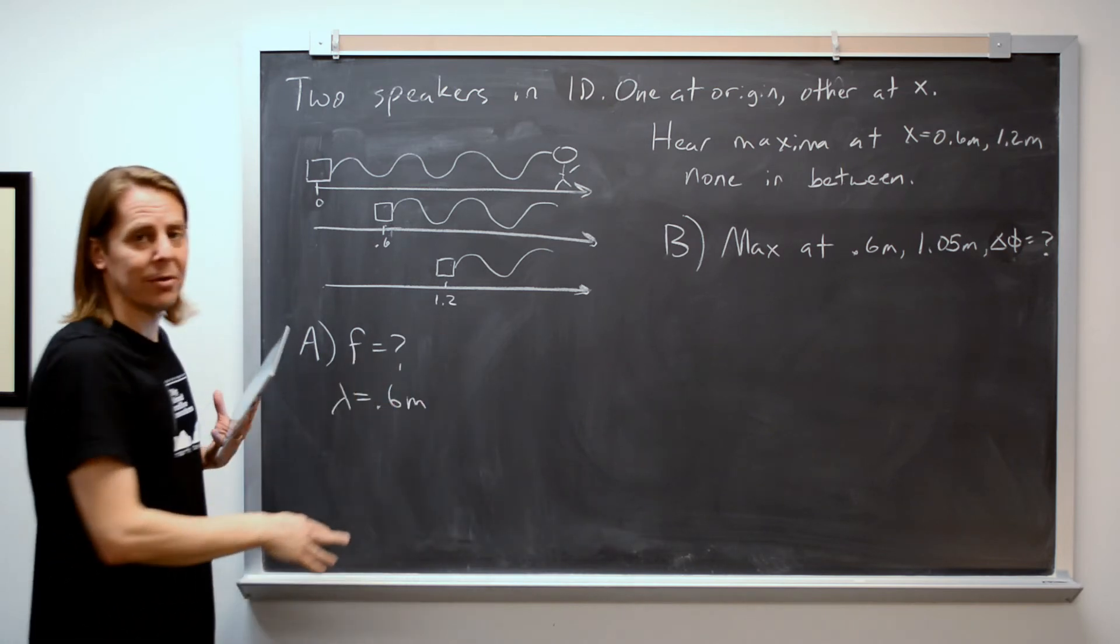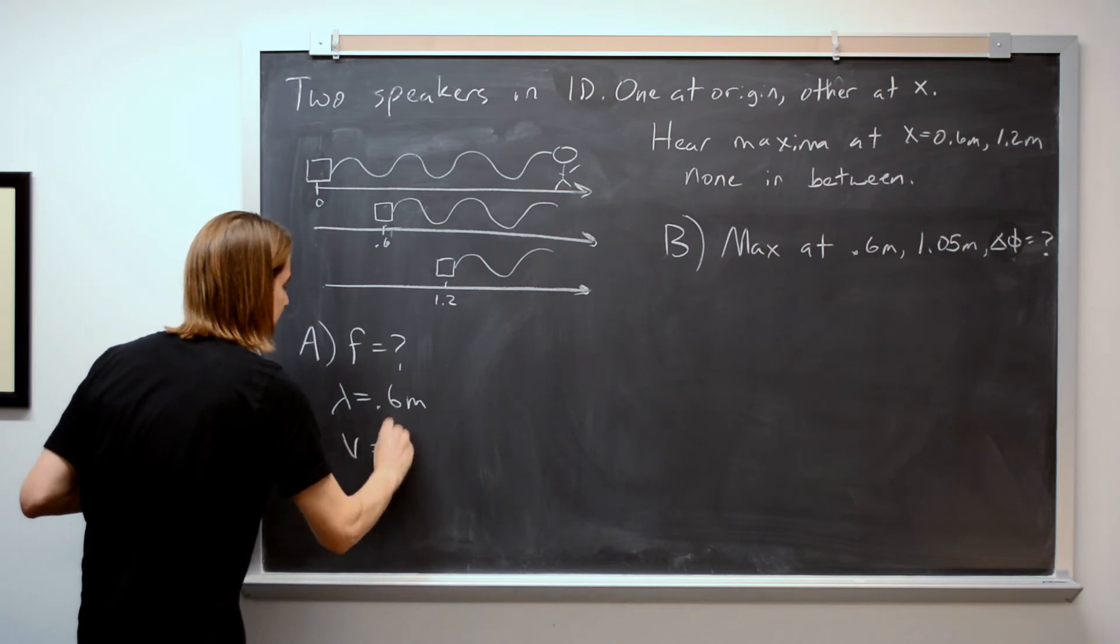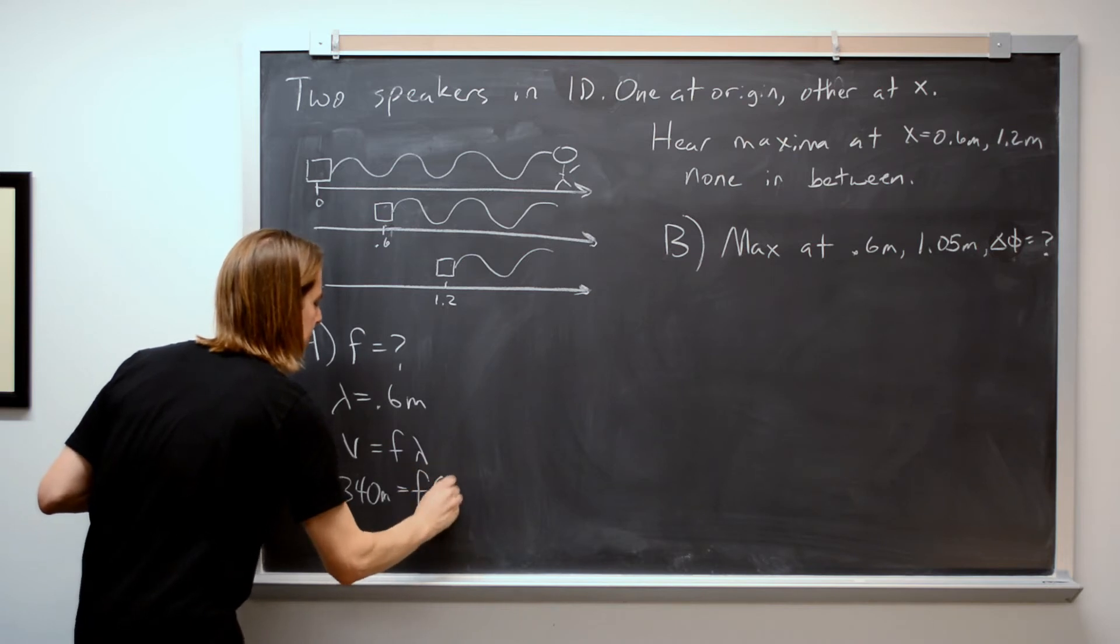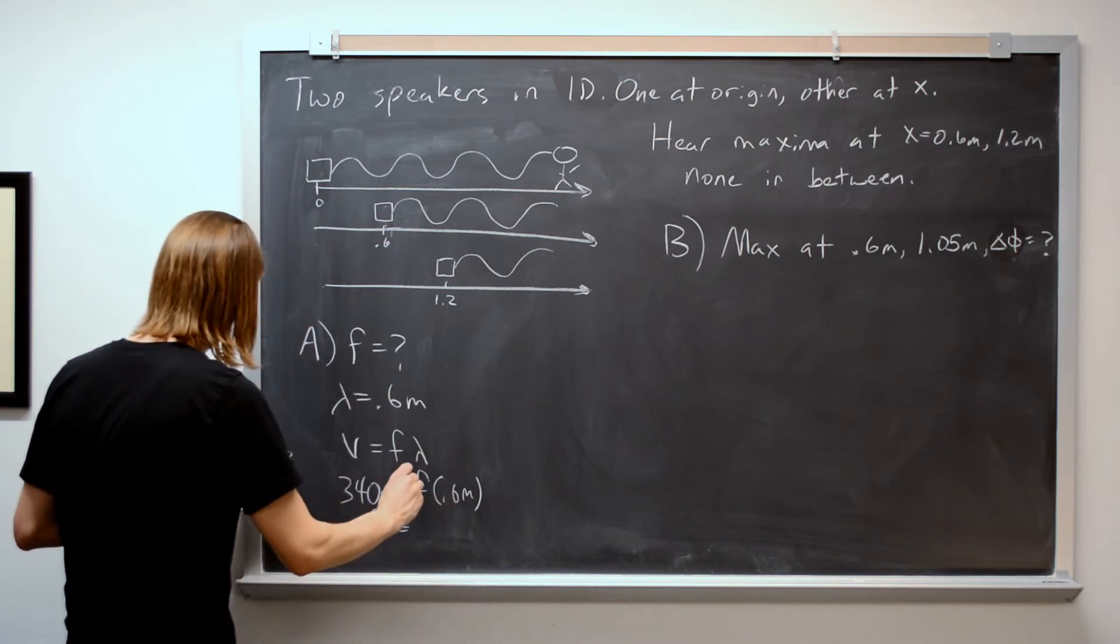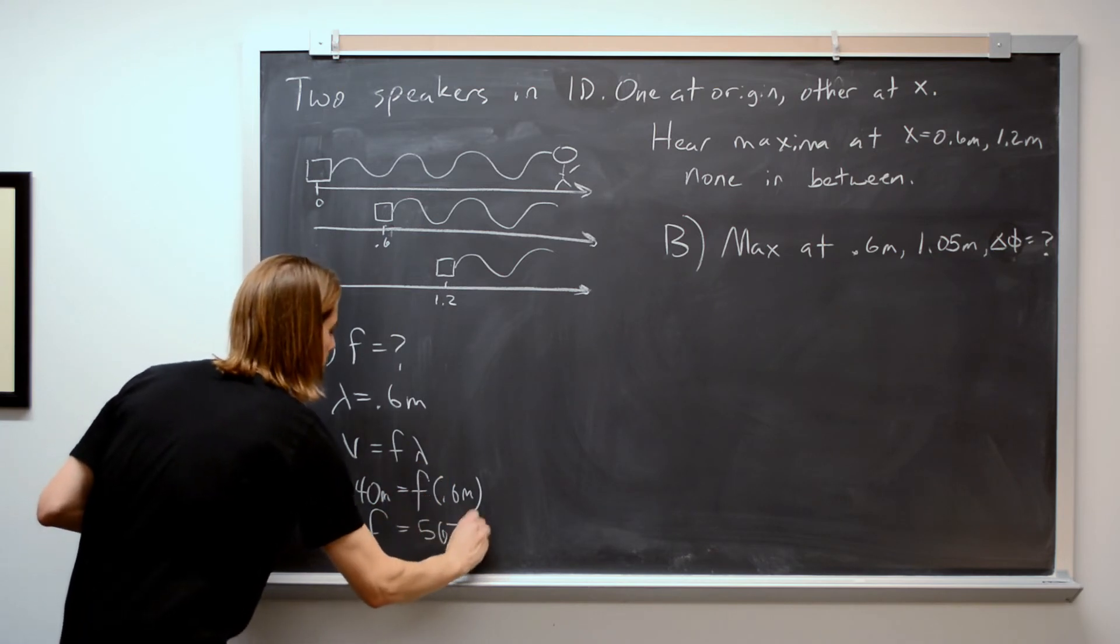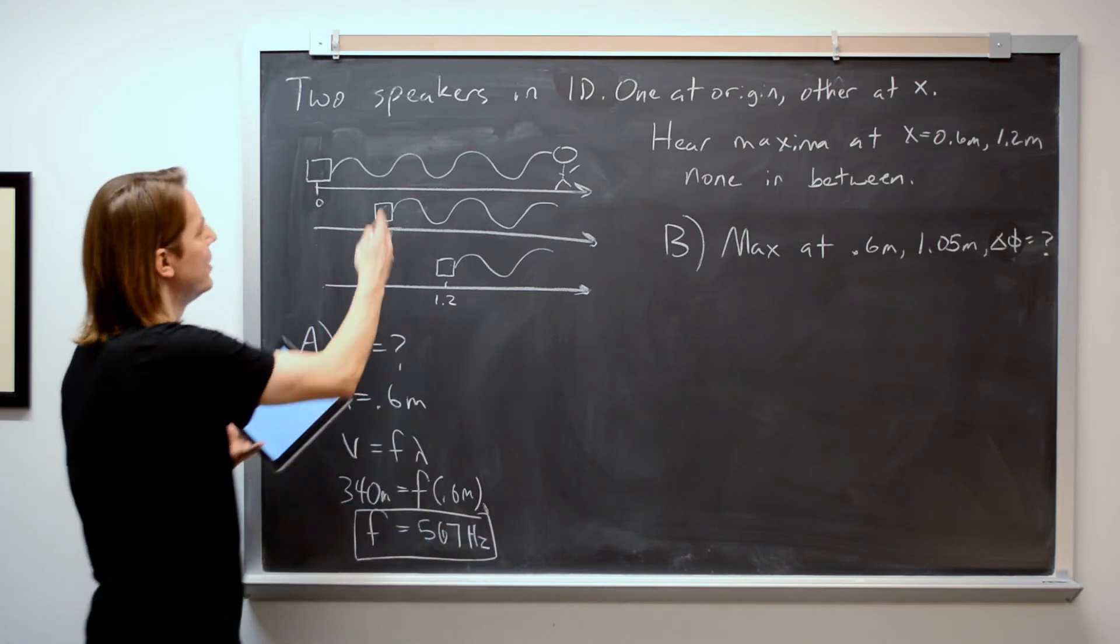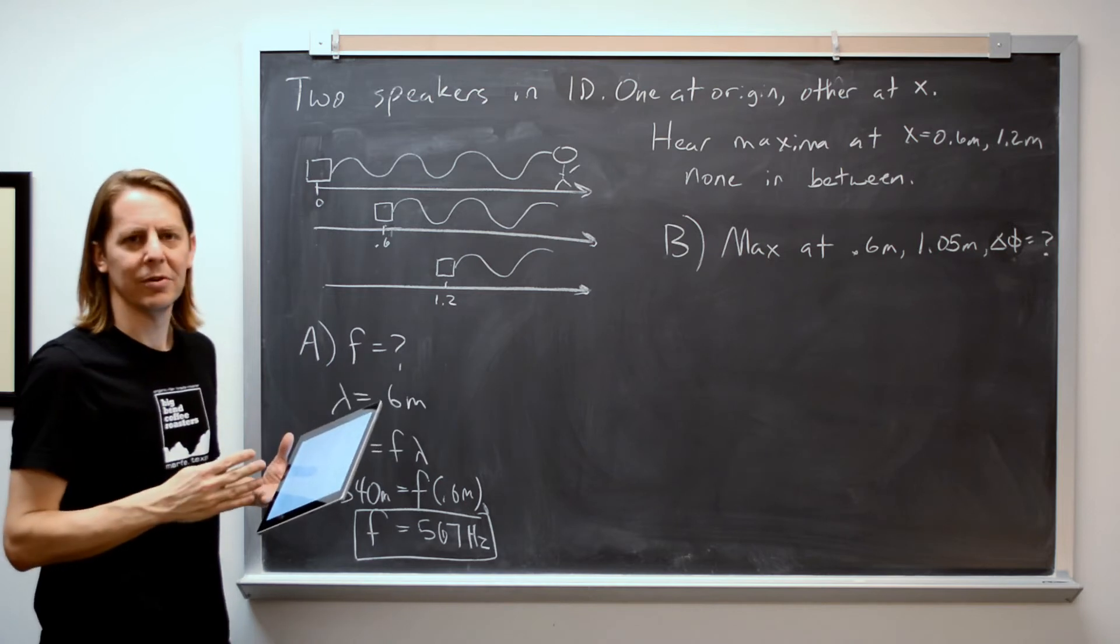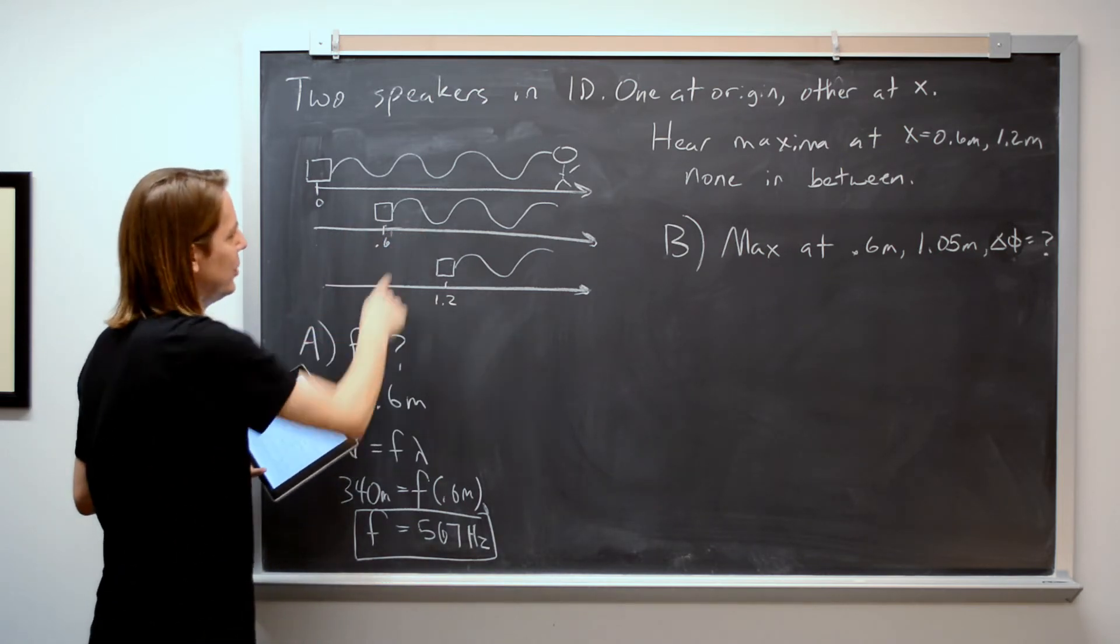So once we have the wavelength, then we pull our standard trick where we say the speed is the frequency times the wavelength. So we know 340 meters per second is the frequency times 0.6 meters. And therefore, the answer is that the frequency is 567 hertz. So any time you're given a spacing between two interference maxima, it has to be the wavelength of the wave. Because one wave has to fit in between the two positions.